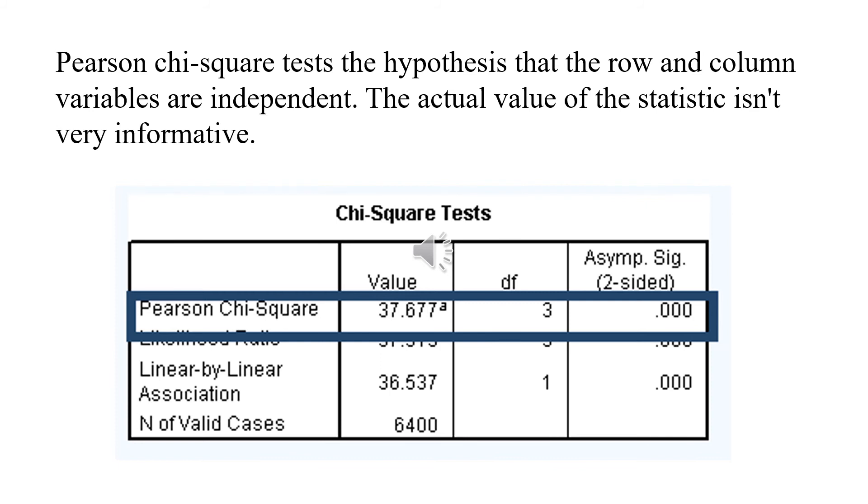A new table will appear below the crosstab table to represent the chi-square result. As you know, the chi-square test has two hypotheses. The null hypothesis is that the two variables are independent, while the alternative hypothesis is that the two variables are related or dependent.